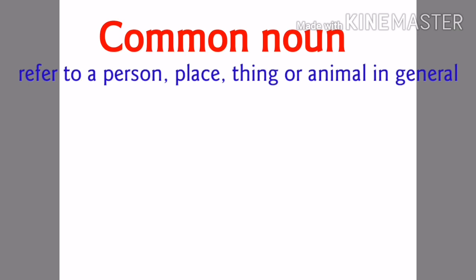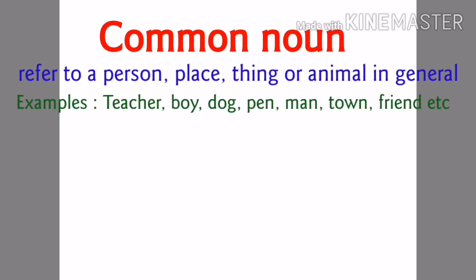The first one is common noun. It refers to a person, place, thing or animal in general. For example: teacher, boy, dog, pen, man, town, friend, etc. We know there are many teachers in our school taking different subjects and they have their own names, but we generally call them as teachers. So teacher is a common noun.